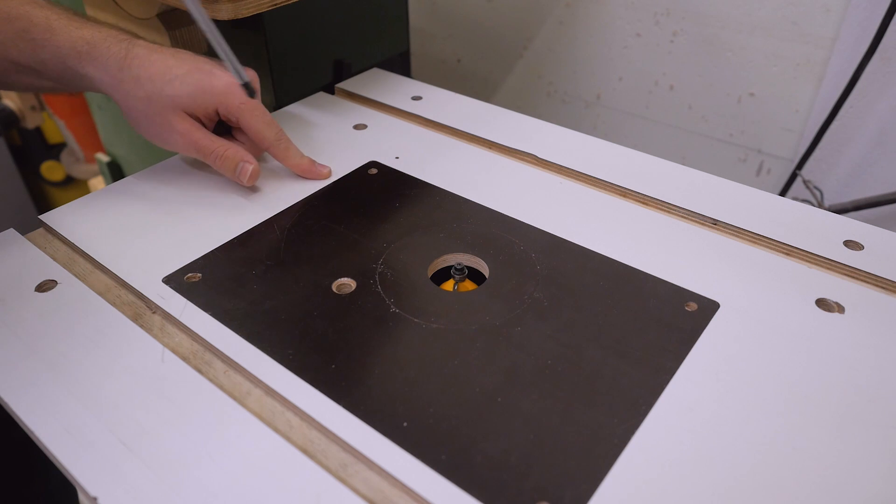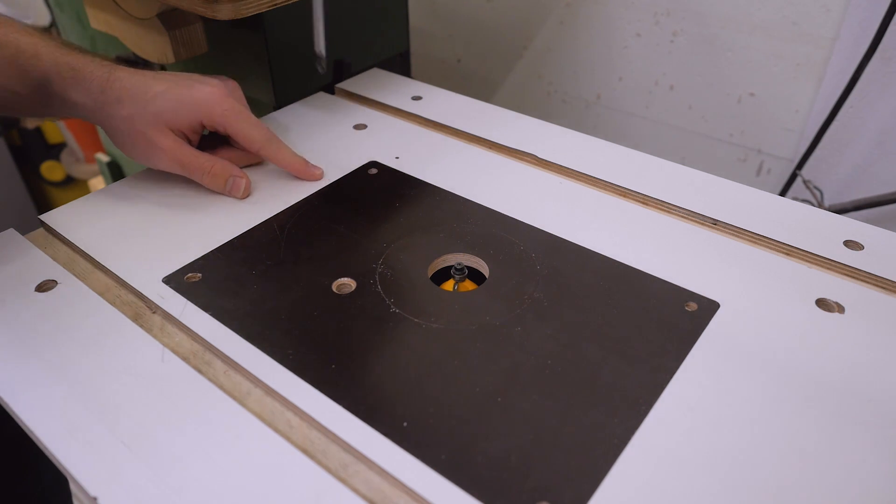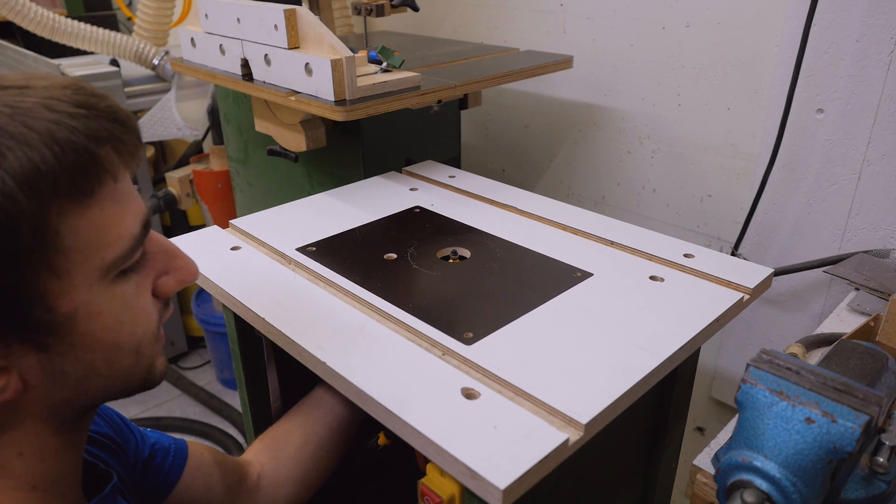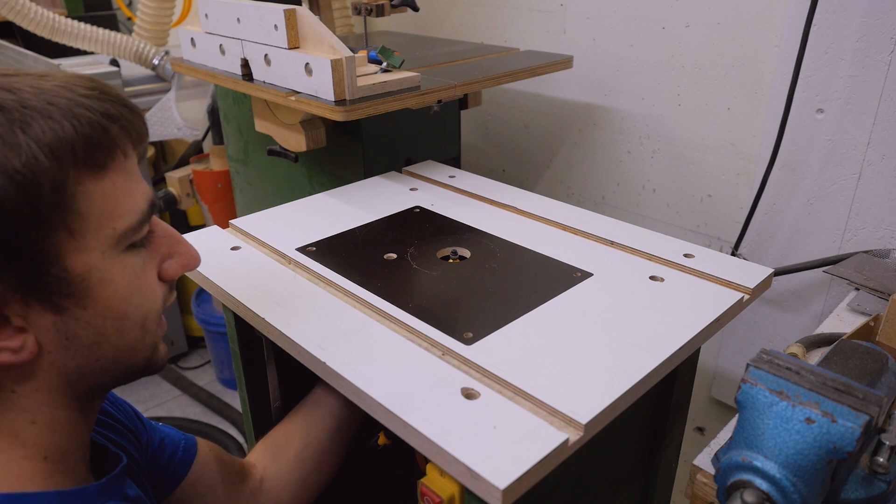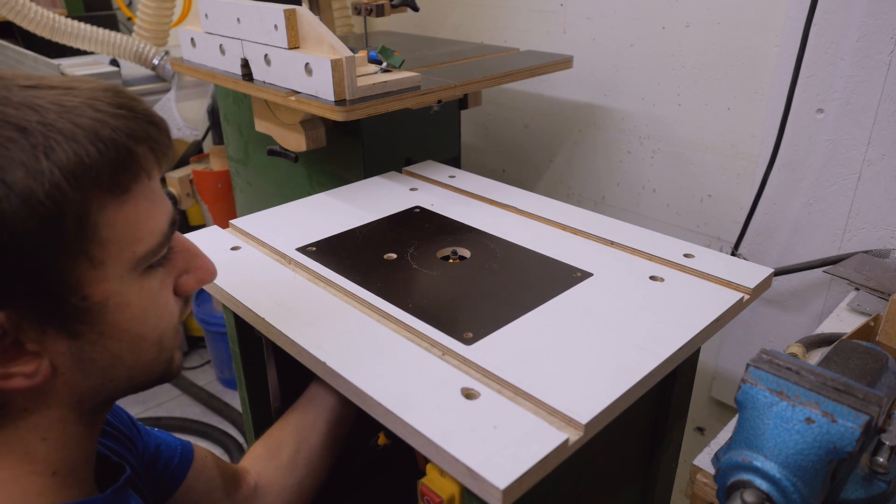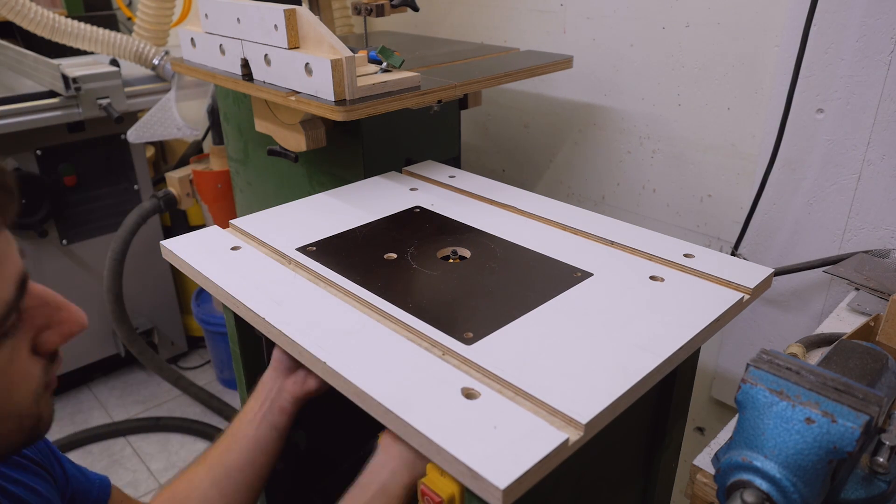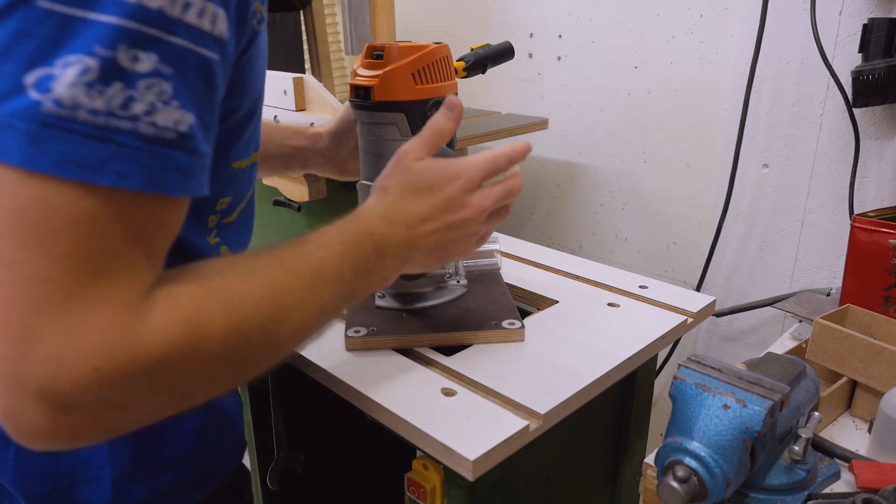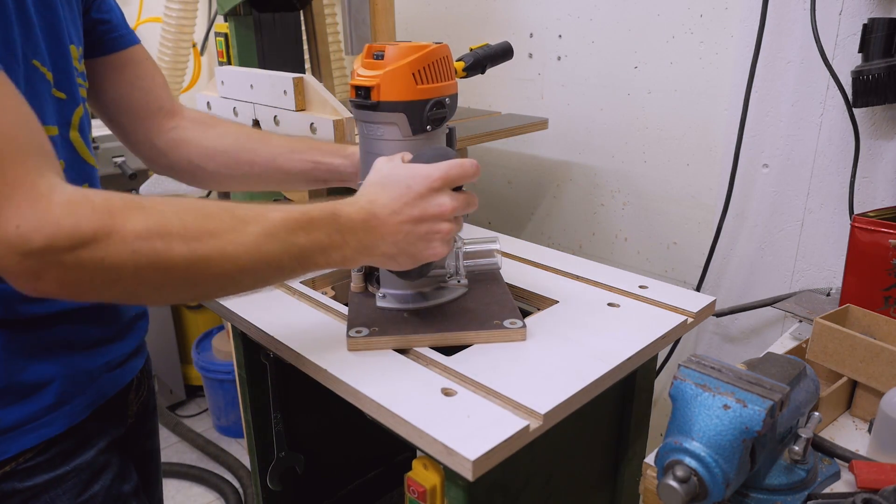The insert plate is height adjustable from above the table and is held in place with four knobs. That means I can get it out without any tools and use it as a fixed base router with a much bigger base.